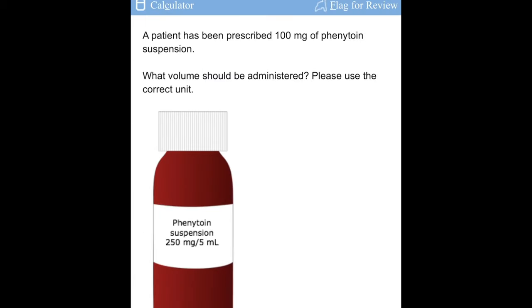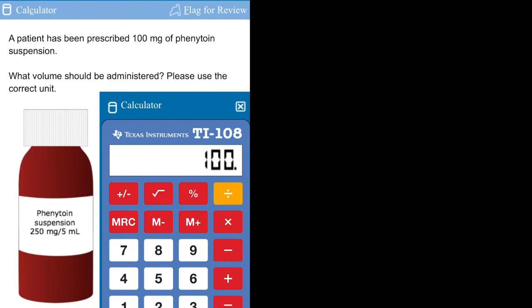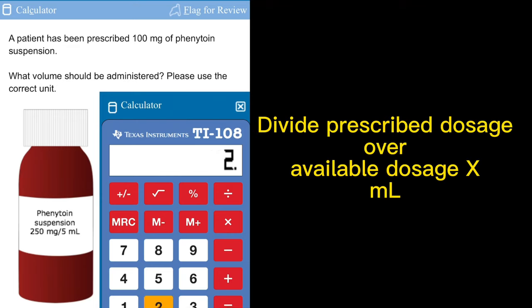Our next question is asking us to provide the volume that should be administered when given a prescribed dosage of 100 milligram of phenytoin. You're supposed to provide an answer in the correct units. Just divide the prescribed dosage over your available dose, just like you've been doing previously.